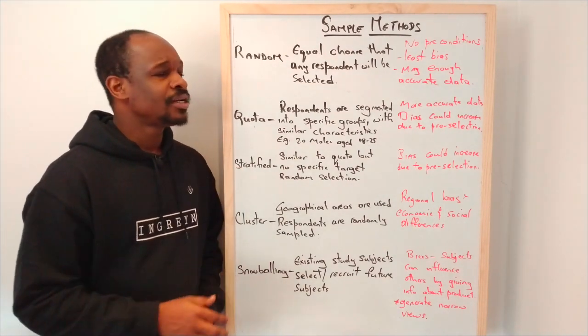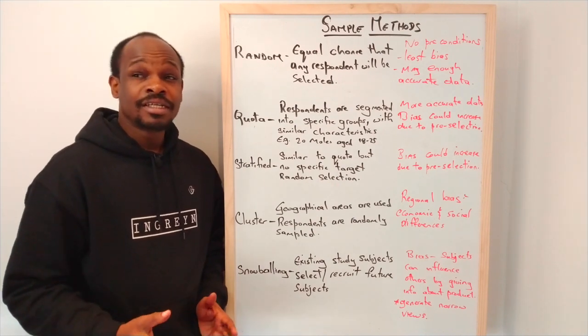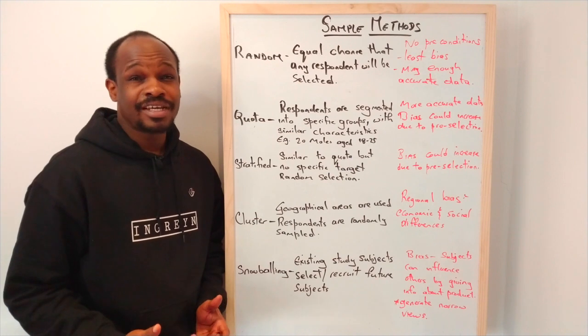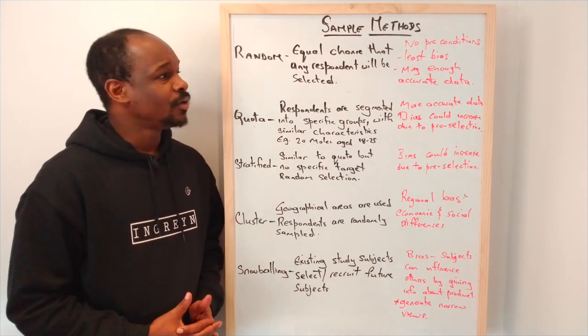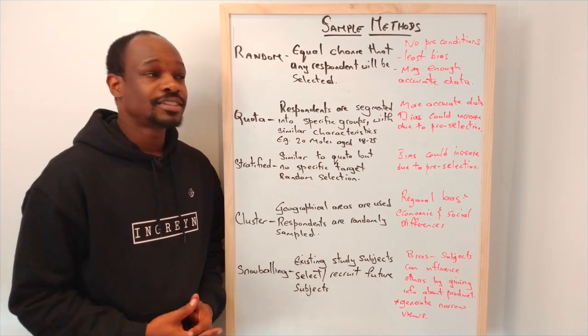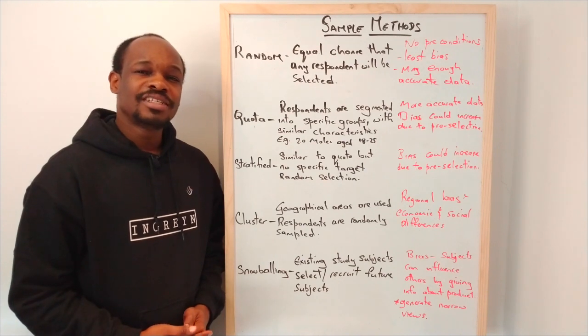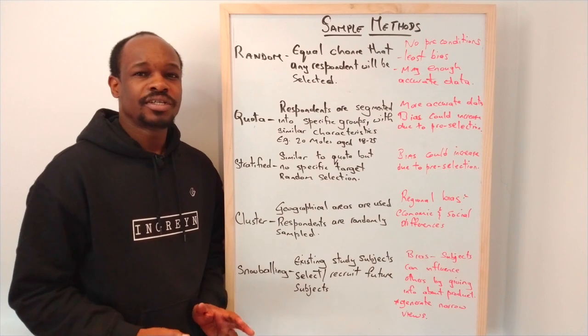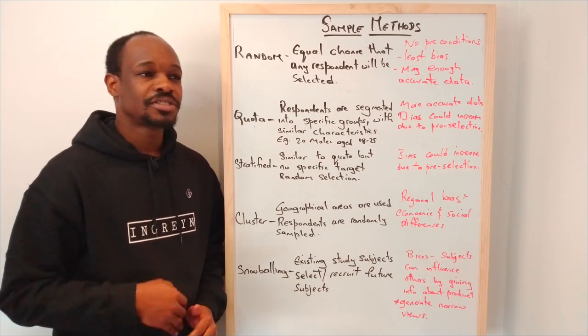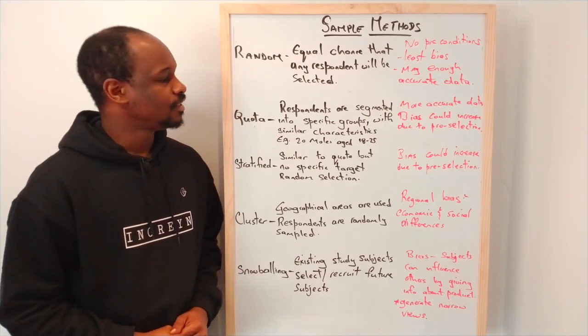In doing random sampling, it can be time consuming and the interviewer needs to have some knowledge in interviewing to get accurate data. Random sampling is least biased and there are no preconditions because you're just looking at the population and randomly selecting individuals.